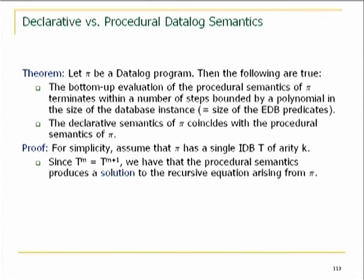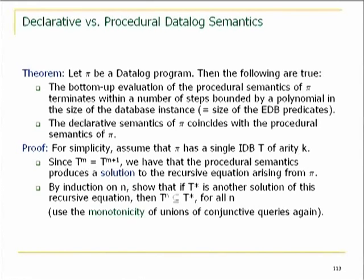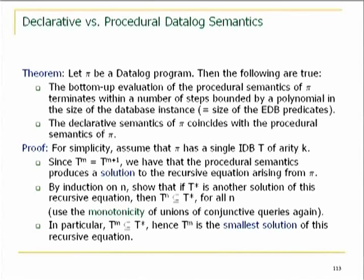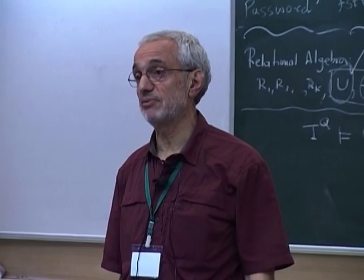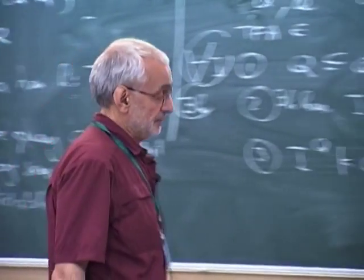We have found a solution: Tₘ = Tₘ₊₁. Now we prove this is the smallest solution by induction: if there is another solution T*, then every level of the iteration is contained in T*. T₀ is empty so it's contained in every solution; monotonicity gives the rest. Putting the two together, when we have stopped, Tₘ ⊆ T*, so Tₘ is the smallest solution. We have proved that the smallest solution exists — the declarative semantics is well-defined — and it's obtained through bottom-up evaluation. This is a special case of the Knaster-Tarski theorem.